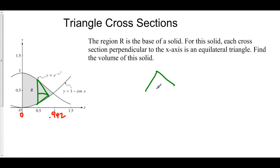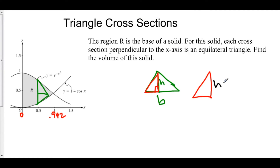Let's take a look at the front view of our equilateral triangle. We know what the base is — the base is the top function minus the bottom function. But we want to get the height in terms of the base. We can use the Pythagorean theorem to take a look at one part of our triangle, since here we have a right triangle. The height of this right triangle is h, and the base of this right triangle is b over 2. The hypotenuse, because this is an equilateral triangle, is the same as the base — so that's just b.